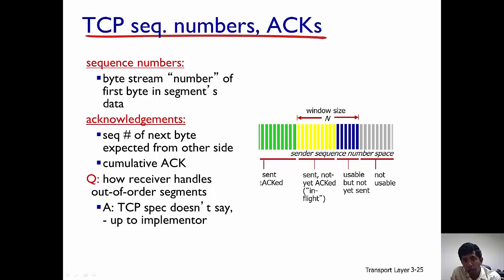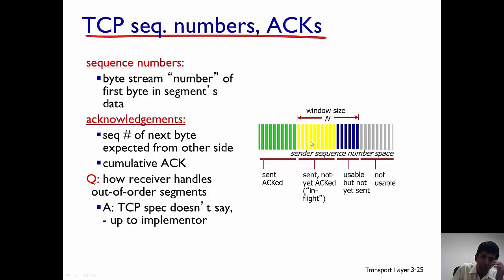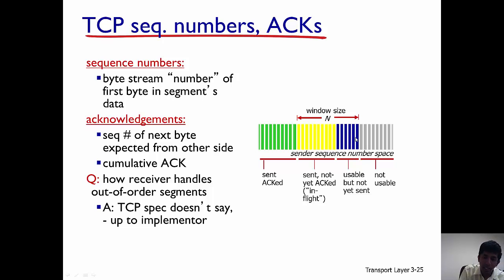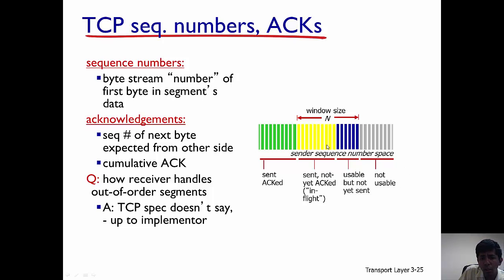Let's look at an example to understand how sequence numbers and acknowledgements work. The green bars represent sequence numbers for packets which have already been sent and acknowledged. The yellow bars are for packets which have been sent but not yet acknowledged — these are packets in transit between the sender and the receiver. The blue bars indicate sequence numbers which can be used by the sender but have not yet been sent. The window size is N, so only N packets can be sent and unacknowledged.